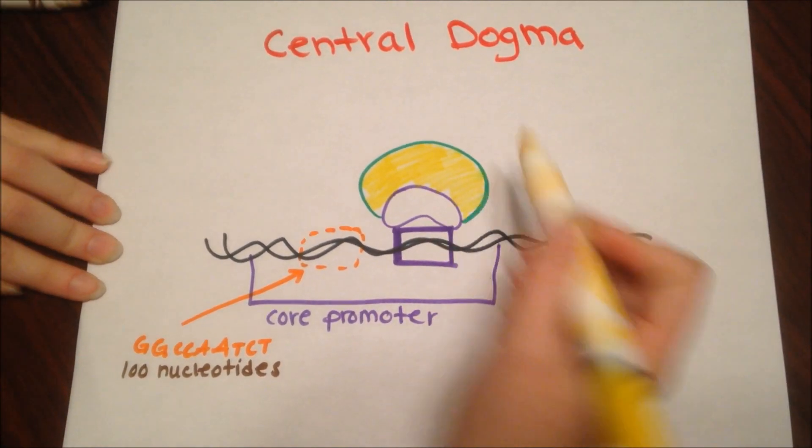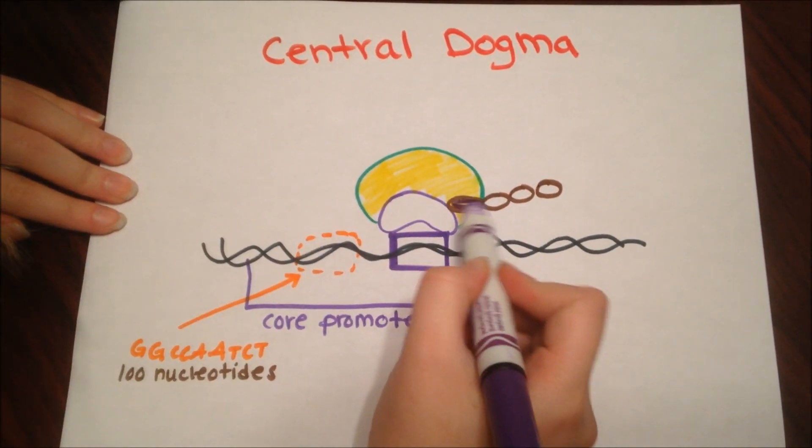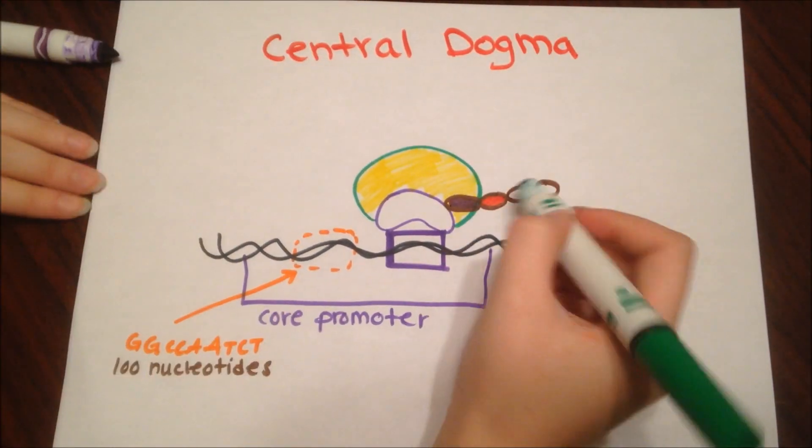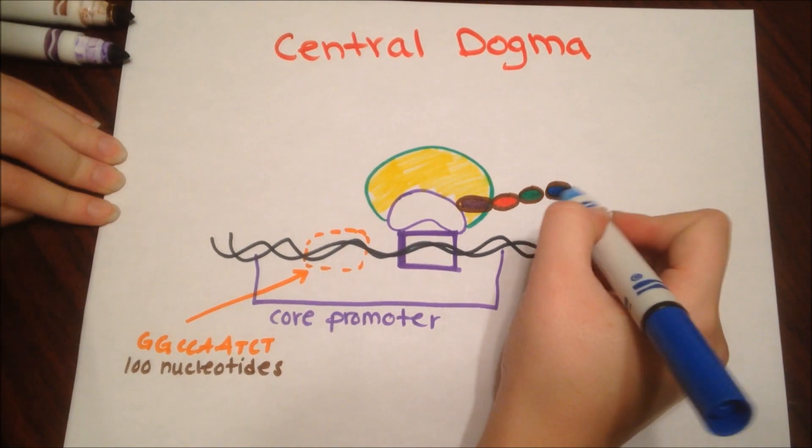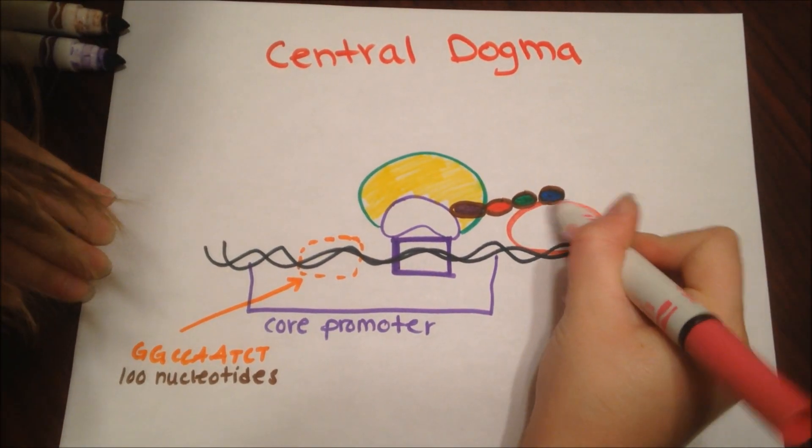As this happens, basal factors such as TF2A, TF2C, and TF2D gradually attach to the Tata binding protein, forming a chain which attract to and hold in RNA polymerase 2, or RNAP2.